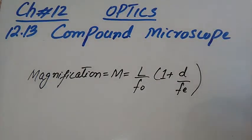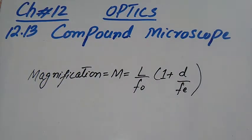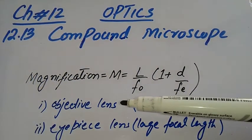In the previous lecture, we discussed the compound microscope. If we need a higher magnification, we use a compound microscope. It has more magnification compared to a simple microscope because we use two convex lenses.